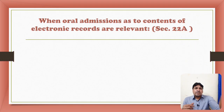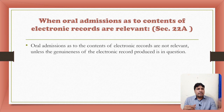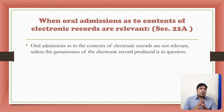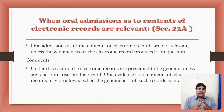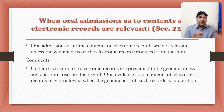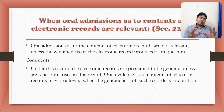Section 22A deals with when oral admission as to contents of electronic records are relevant. Under this section, electronic records are presumed to be genuine unless any question arises in this regard. Oral evidence as to the contents of electronic records may be allowed when the genuineness of such records is in question. Jabhi bhi electronic record ka genuineness agar question mein aata hai, tab usse related oral admission Section 22A mein admissible hoga, otherwise not.